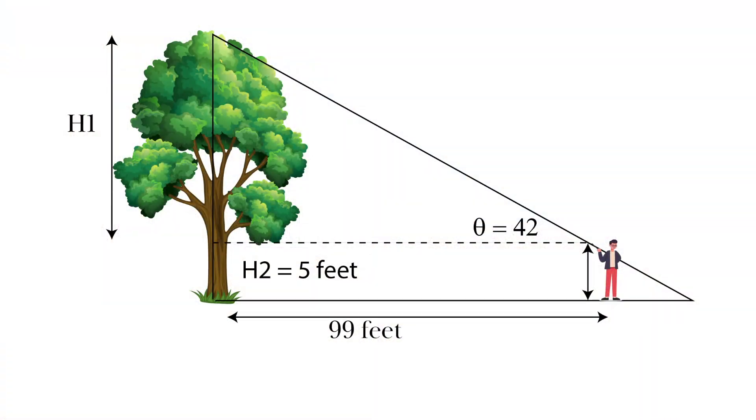So plugging these values in, h2 is 5 feet, our angle is 42, and the distance to the base of the tree was 99 feet.